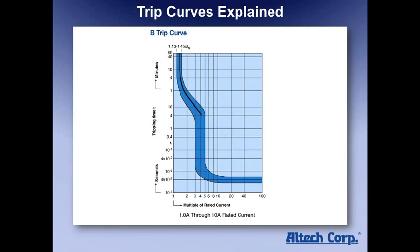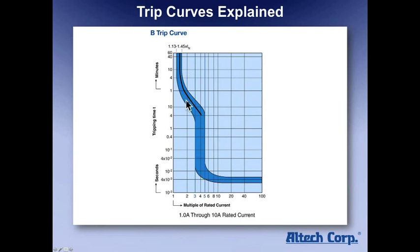The higher the current, the faster the breaker will trip. The lower the current, the breaker may or may not trip. Let's pretend this is a 1 amp breaker — we're looking at 1 amp, 2 amp, 3 amp, all the way up to 100 amp. On the time axis, we go from an hour all the way down to microseconds. We're looking here at an overload section, and separately the short circuit area and the inrush capability area.